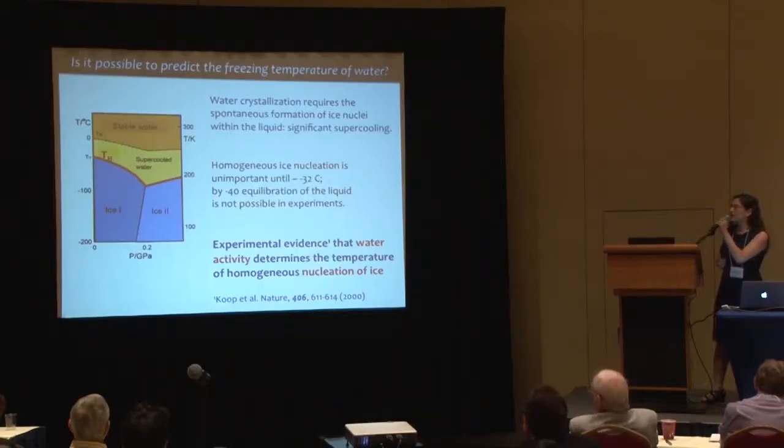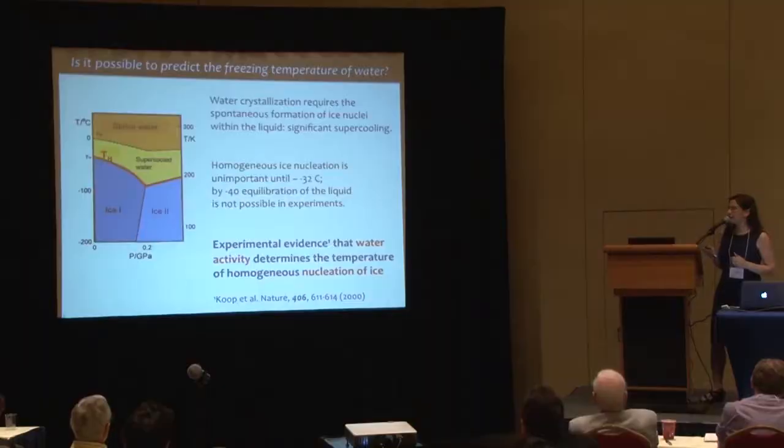There has been a wealth of experimental evidence, starting from the work of Angell in 1976 and more recently the definitive paper in 2000 by Koop and co-workers, showing that if you know the thermodynamics of liquid water — the water activity, that is the chemical potential — you can predict the freezing temperature of ice. That's quite unusual because it doesn't happen for other liquids, and it relates equilibrium thermodynamics of the liquid with the non-equilibrium freezing point.